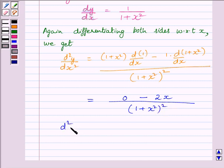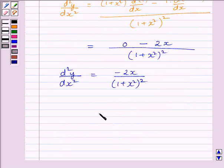Or, we can say the second derivative of y is equal to d square y upon dx square equal to minus 2x upon 1 plus x square whole square. So, our required second order derivative is minus 2x upon 1 plus x square whole square.